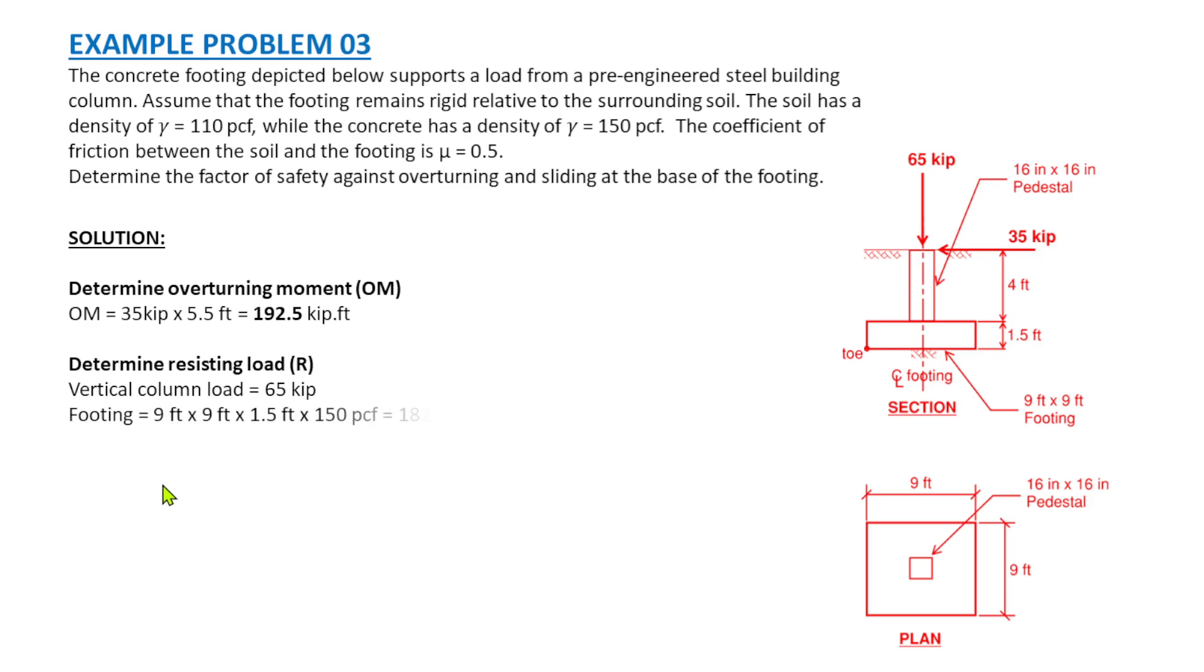The next one is the footing. For the footing we have 9 feet by 9 feet times 1.5, that is the volume, times the density of concrete, 150 pounds per cubic foot, is equal to 18,225 pounds or 18.23 kips.